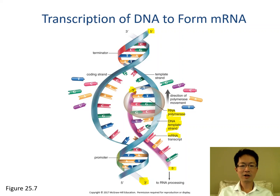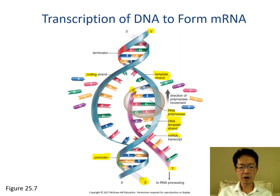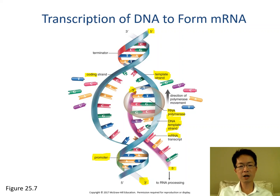In transcription, you have the coding strand and the template strand. The template strand serves as the template for making messenger RNA. You also have the promoter sequence — a special sequence on DNA that the RNA polymerase recognizes and docks onto, like a ship parking next to a pier, and then starts transcription.